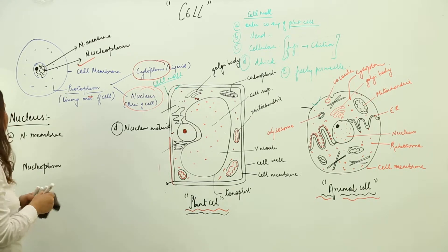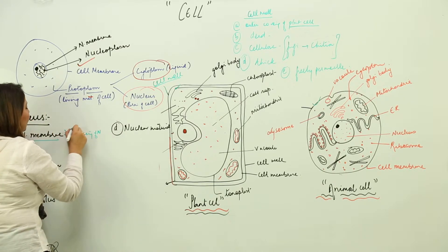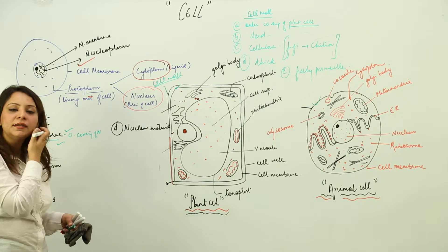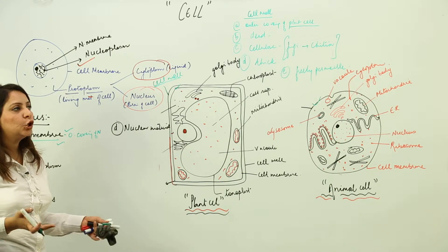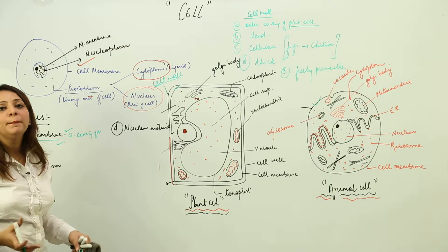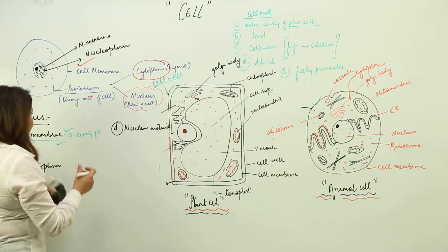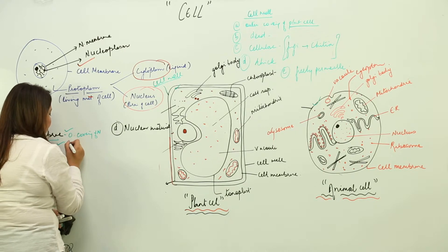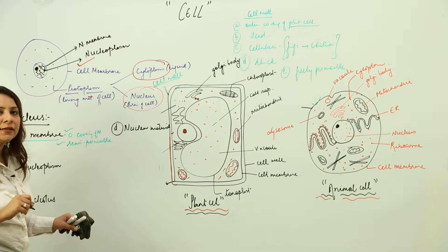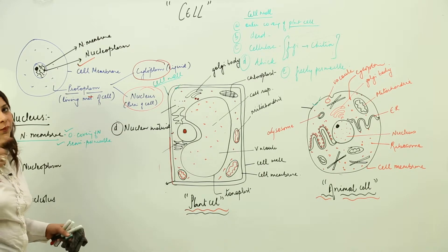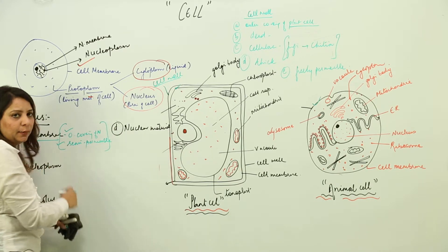The nuclear membrane is the outer covering of the nucleus. Its permeability: it is semi-permeable, because the nucleus must be selective — any foreign particle that enters the cell should not be able to reach and destroy the nuclear material, which is the main treasure of the cell. So the nuclear membrane allows only selected substances to pass through.